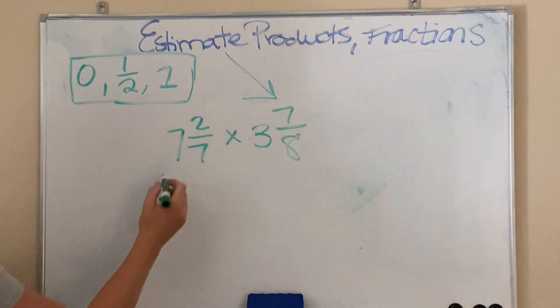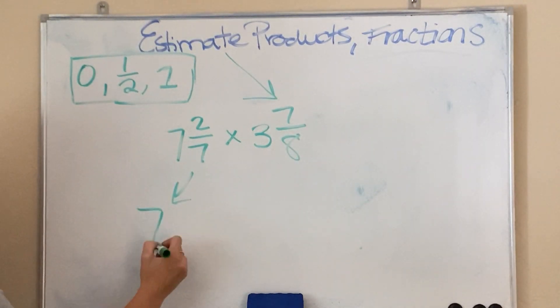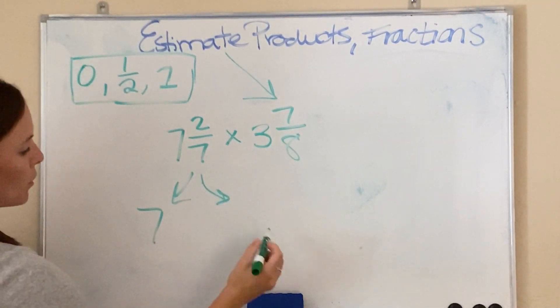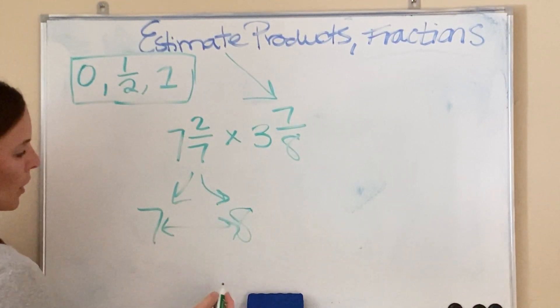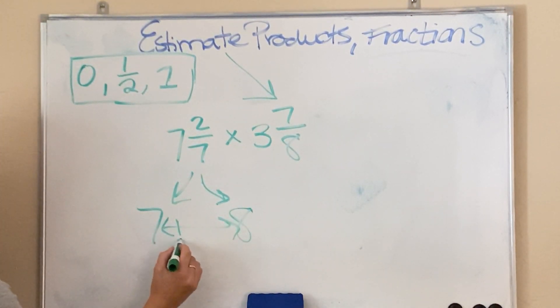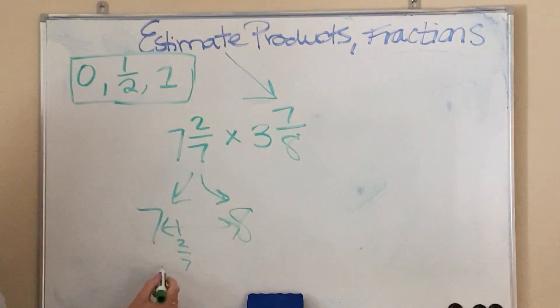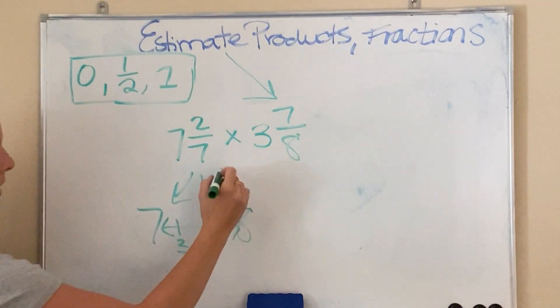7 and 2/7. Is that going to be closer to 7 or is that going to be closer to an 8? Well, where would 2/7 go? 2 out of 7 would be way over here, right? So, 7 and 2/7 is going to round to a whole 7.